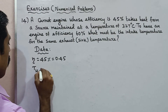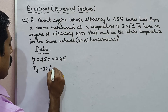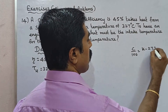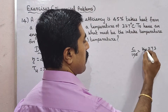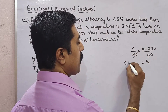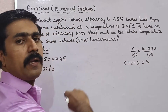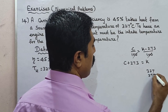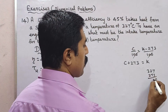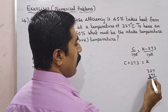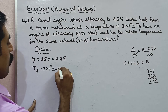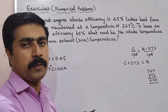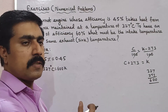Kelvin is the SI unit. The formula is: Celsius equals Kelvin minus 273. So 327 degrees Celsius equals K minus 273, which gives TH1 equal to 327 plus 273, that is 600 Kelvin.